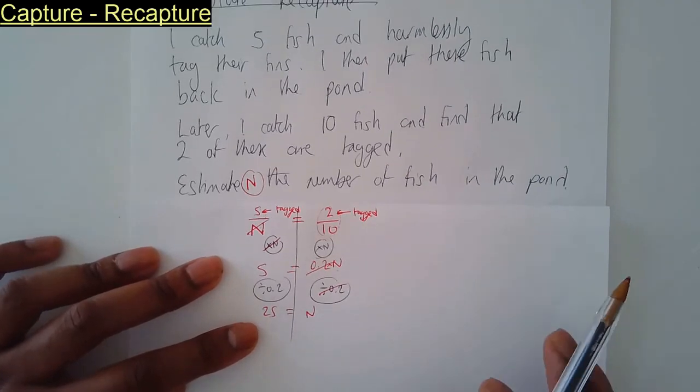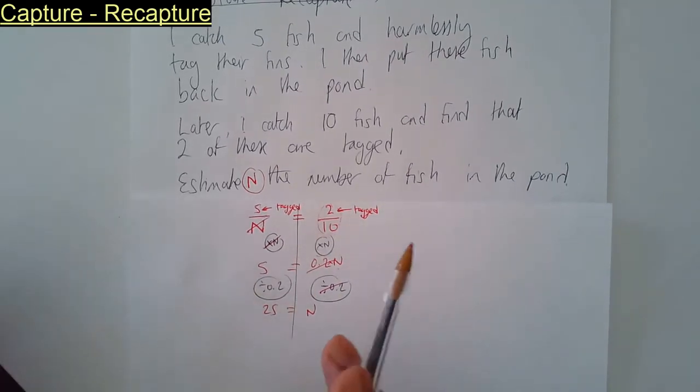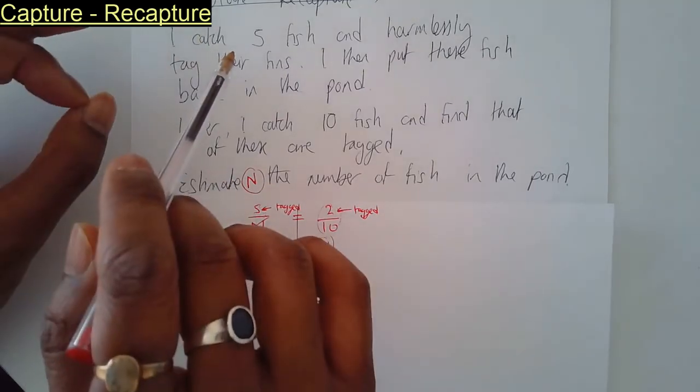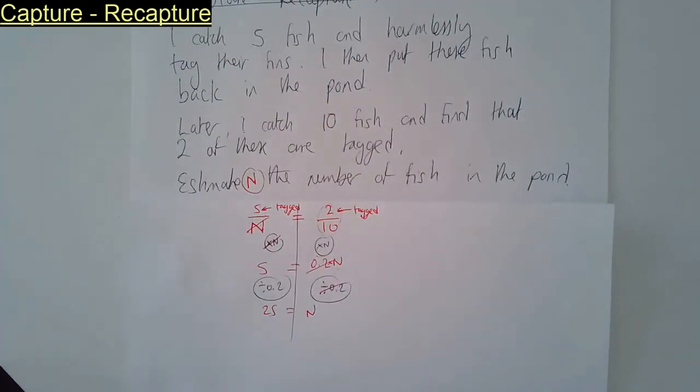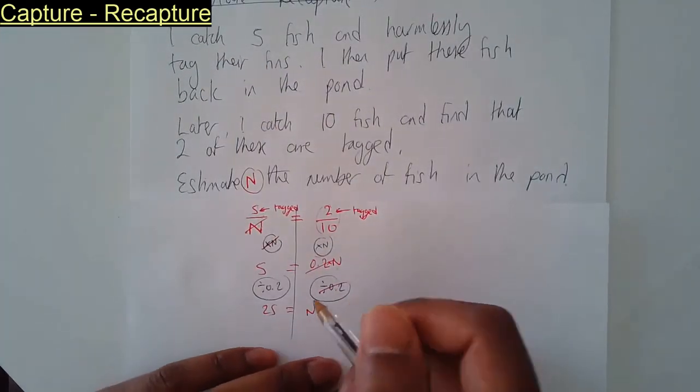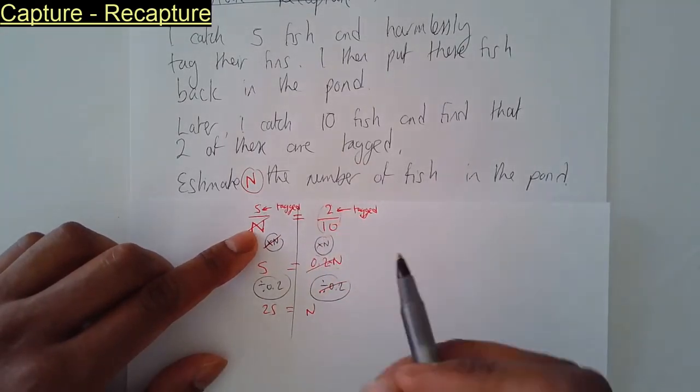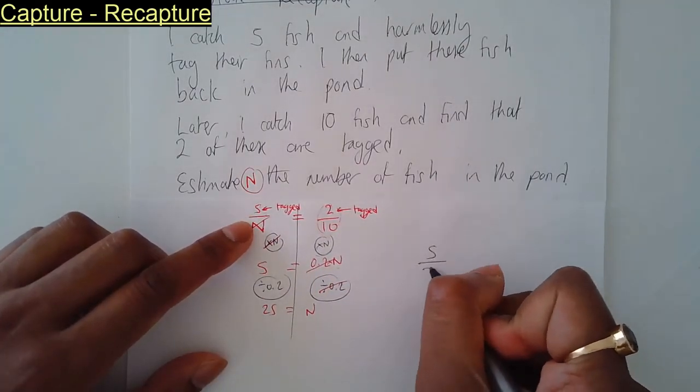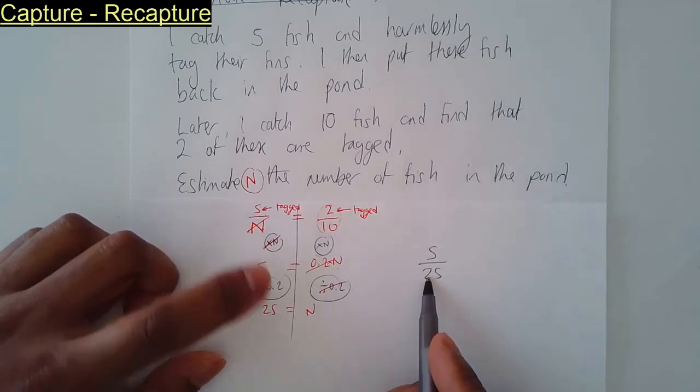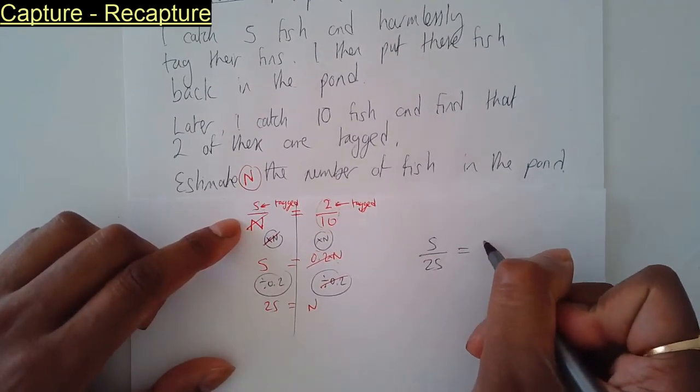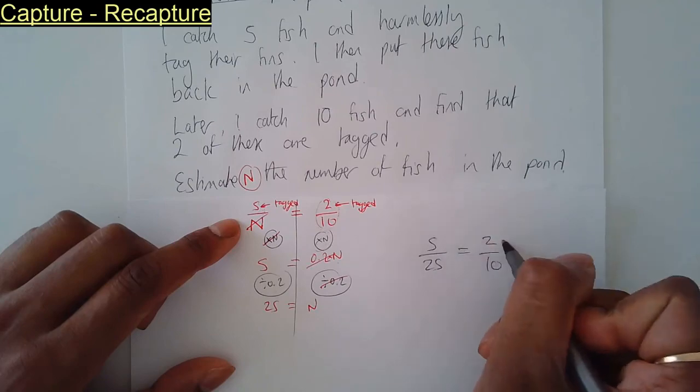We're making the assumption that no fish will die between the first time we caught it and the second time. So I found N is 25. If I put 25 in there, that's 5 over 25, which you just found, and that's equivalent to two tenths. These are equivalent fractions.